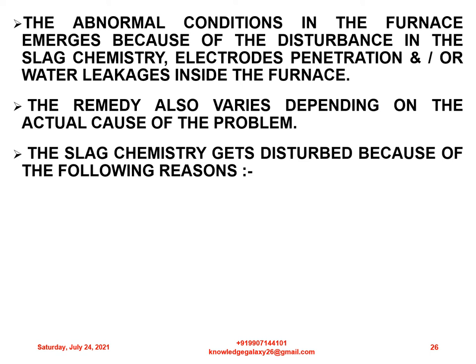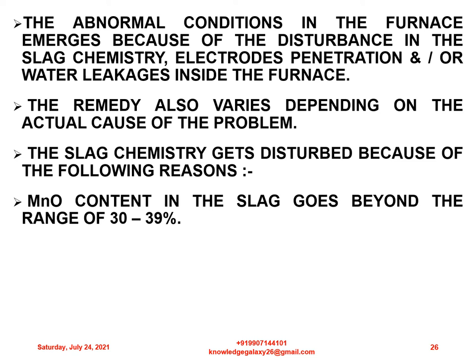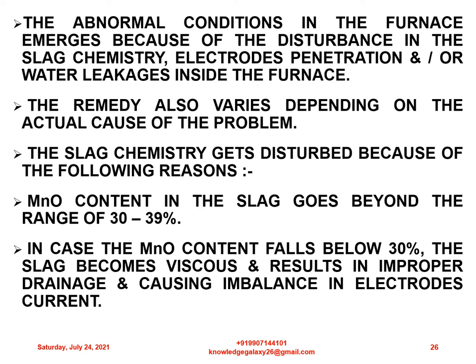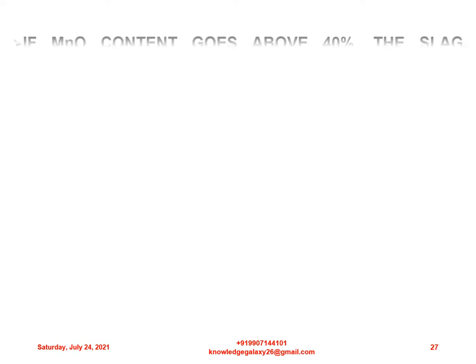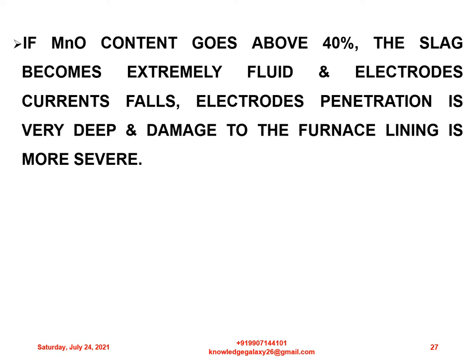The slag chemistry gets disturbed because of the following reasons. MnO content in the slag should be in the range of 30–39%. If the MnO content falls below 30%, the slag becomes viscous and results in improper drainage, causing imbalance in electrode current. If MnO content goes above 40%, the slag becomes extremely fluid, electrode currents fall, electrode penetration is wavy, and damage to the furnace linings is more severe.